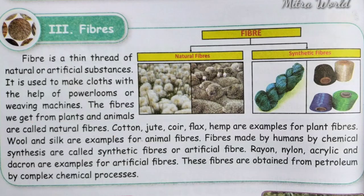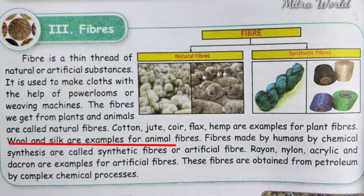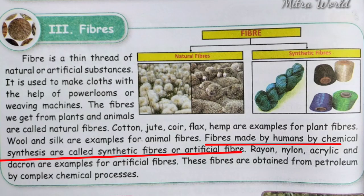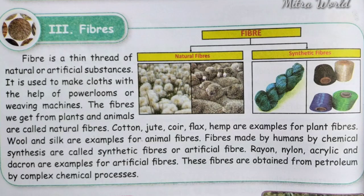The fibers we get from plants and animals are called natural fibers. Examples of plant fibers are cotton, jute, coir, flax, and hemp. Wool and silk are examples of animal fibers. Fibers made by humans through chemical synthesis are called synthetic fibers or artificial fibers. Examples include rayon, nylon, acrylic, and dacron.